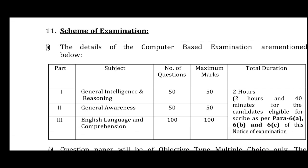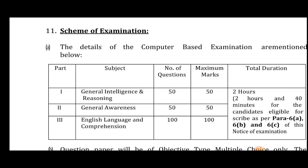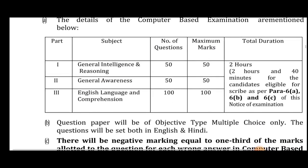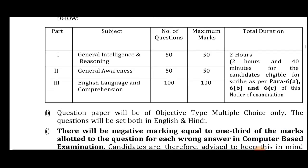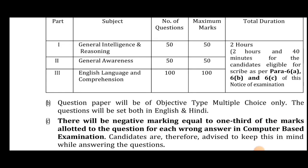You can check the exam pattern. There are three sections in the exam. The first section is General Intelligence and Reasoning. The second section is General Awareness. The third section is English Comprehension. There is a total of 200 marks and a 2-hour examination.